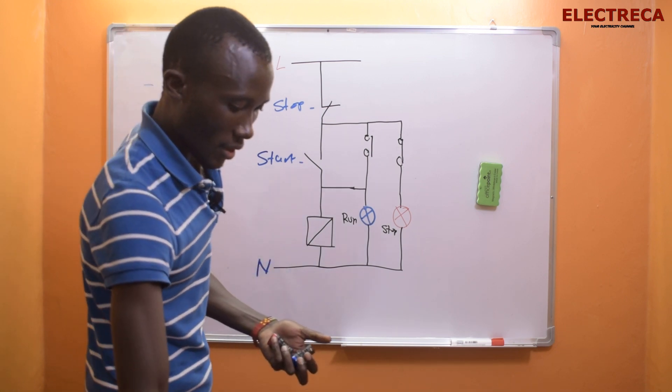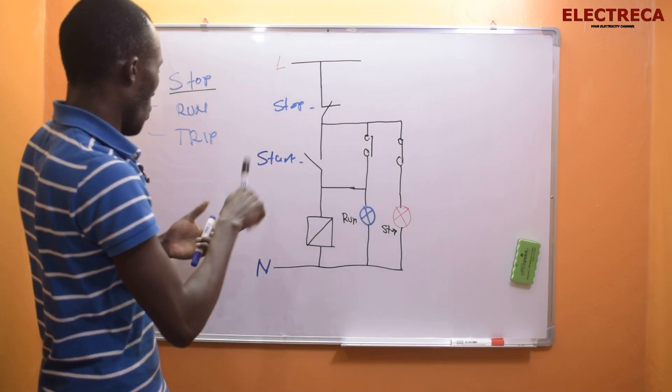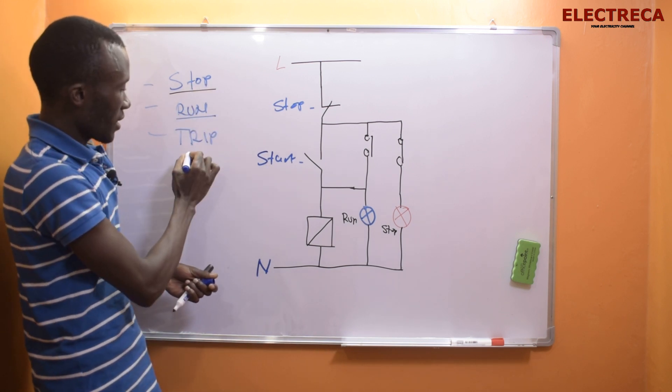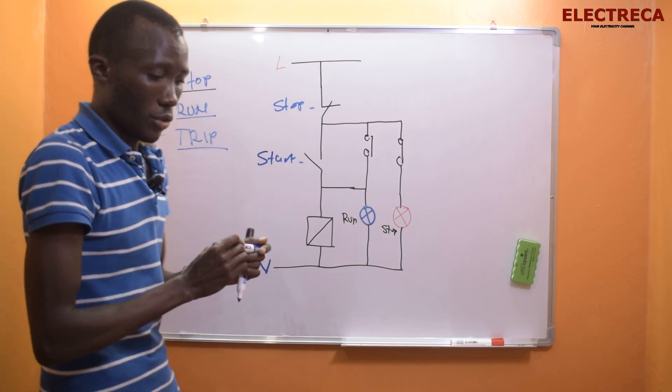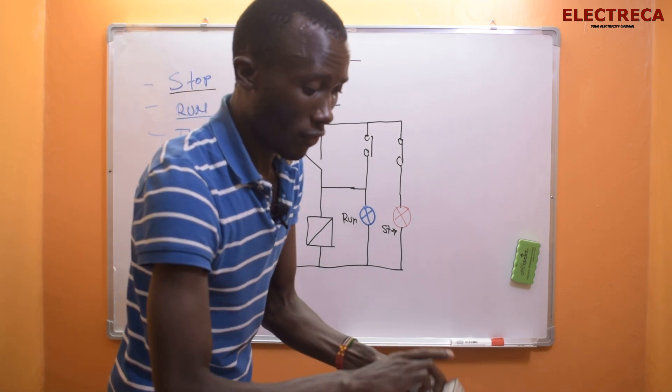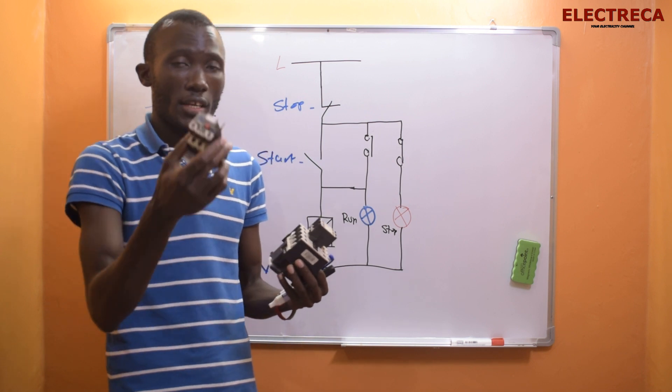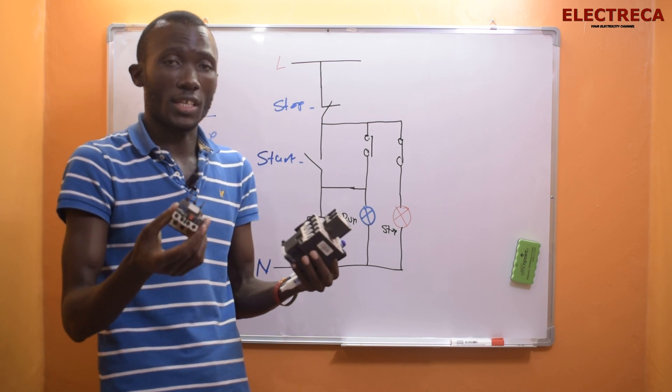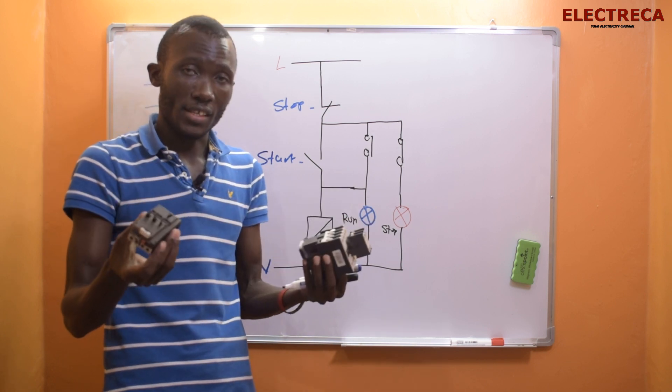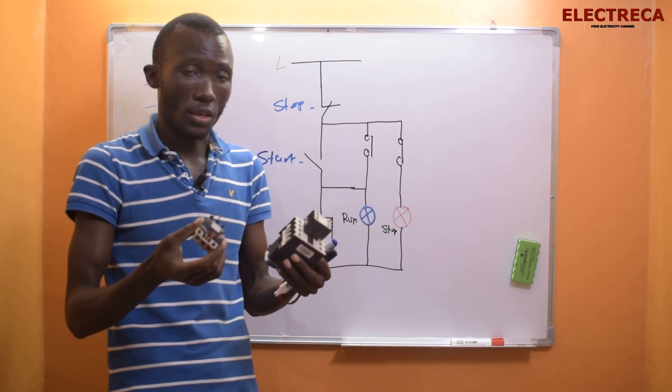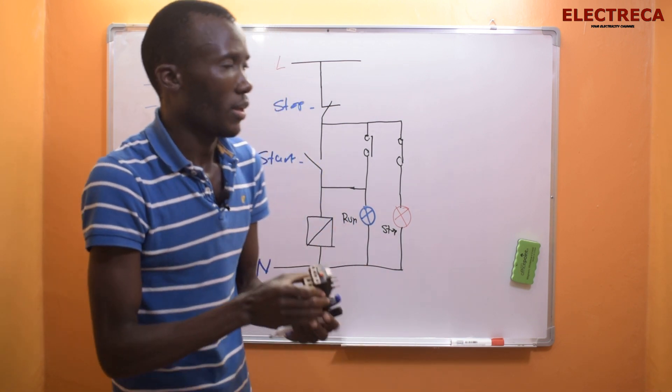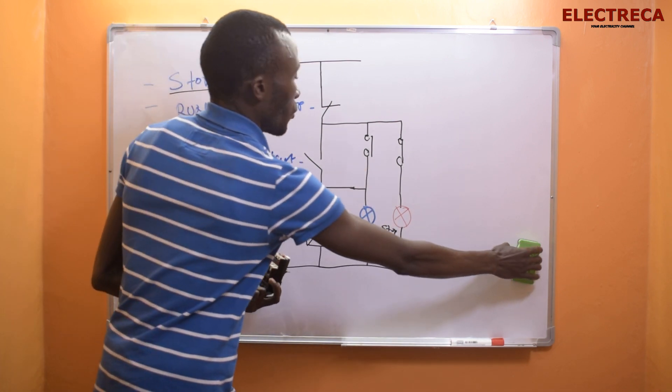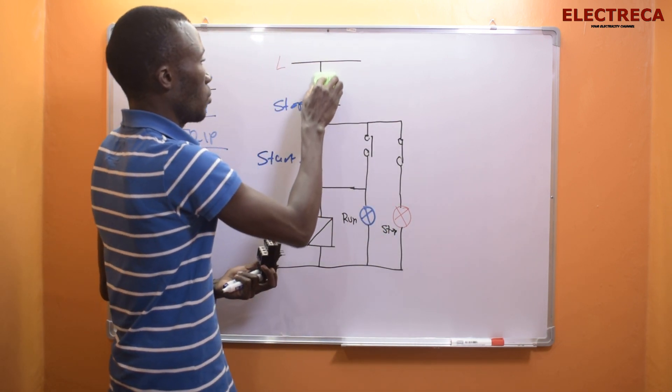We've already done stop and run, now let us tackle trip. Now trip, we have to involve this guy here - the overload relay. This overload relay clips on the contactor and it protects the contactor from overload current. This is how we connect an overload: first of all in your circuit here you have to indicate it, so we break here.